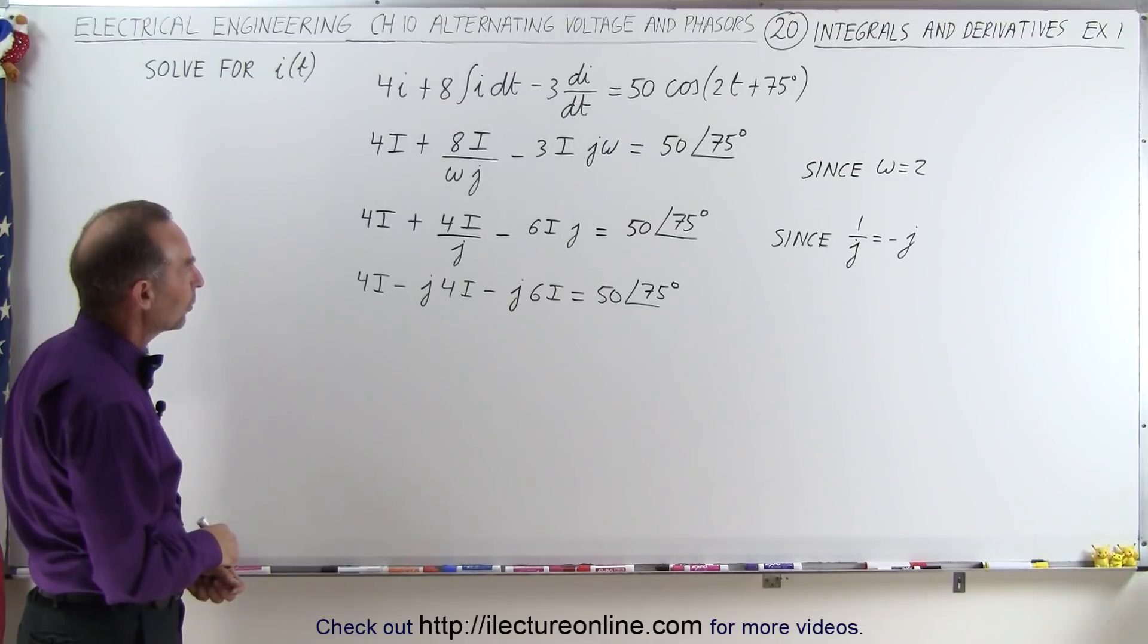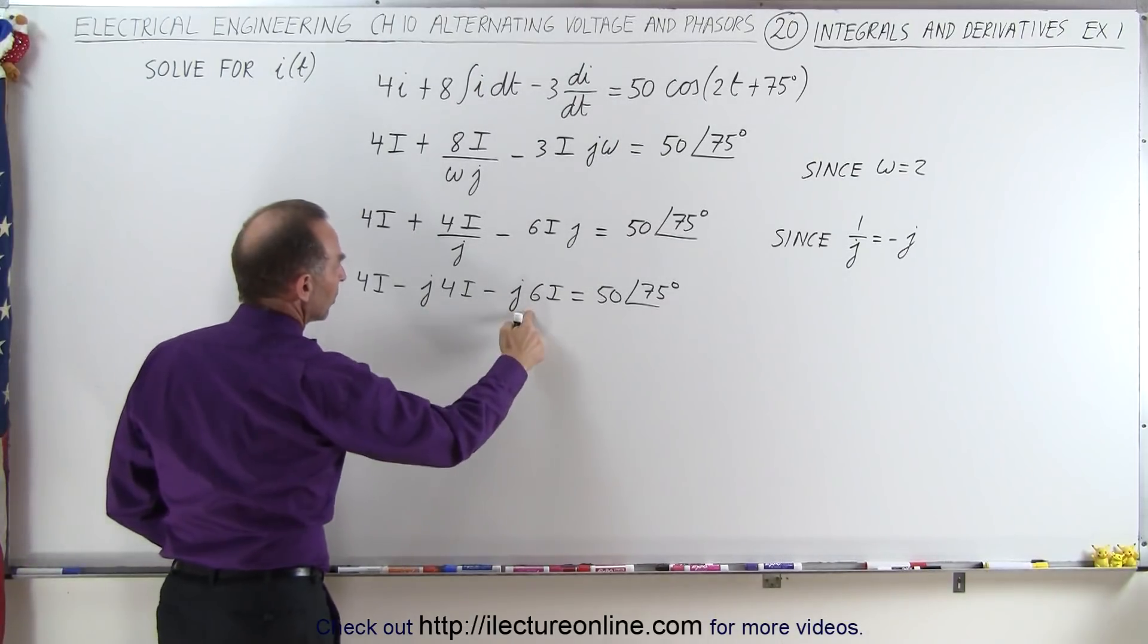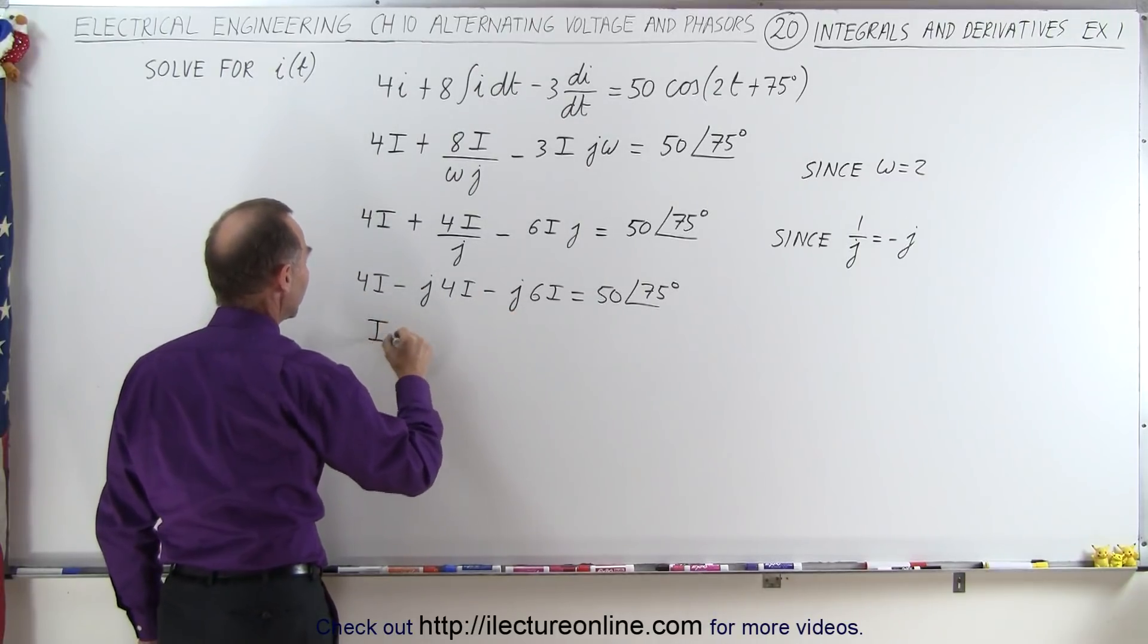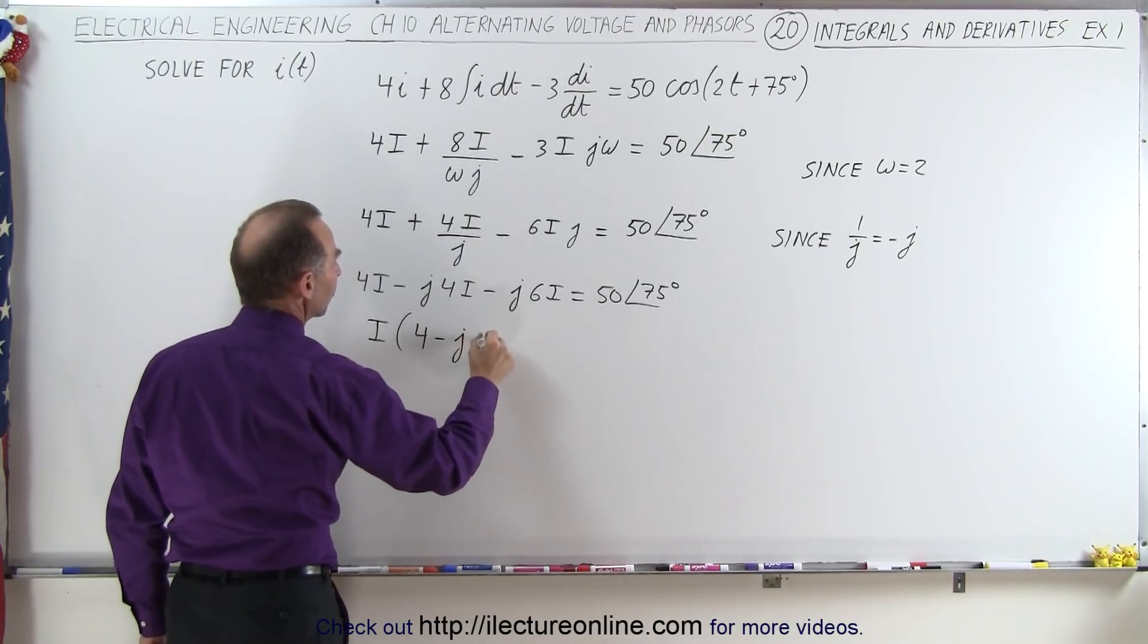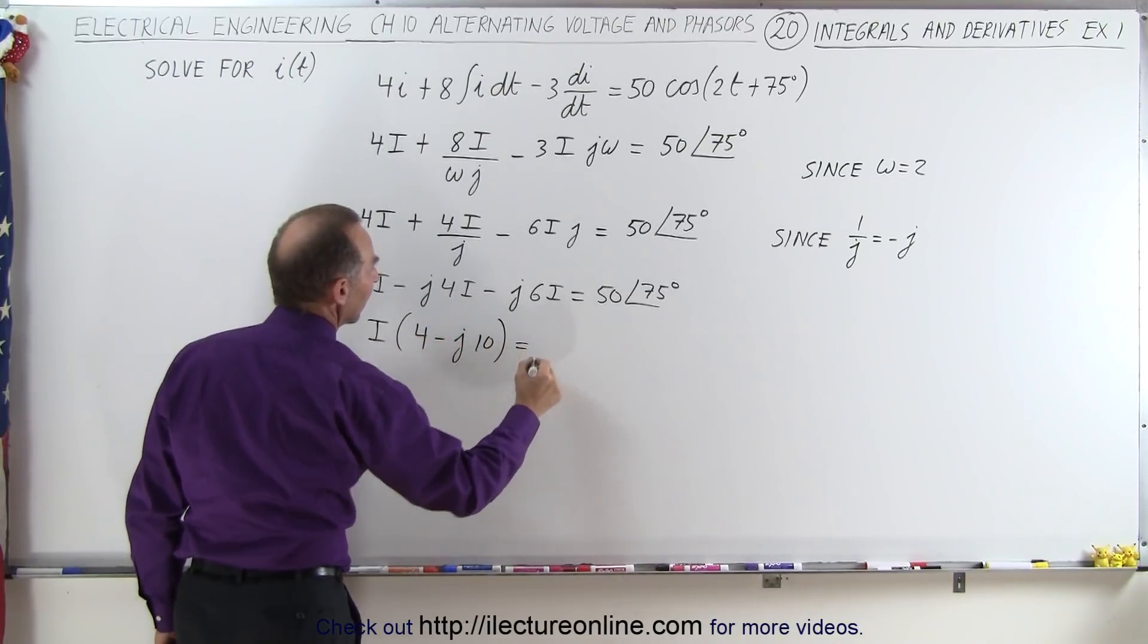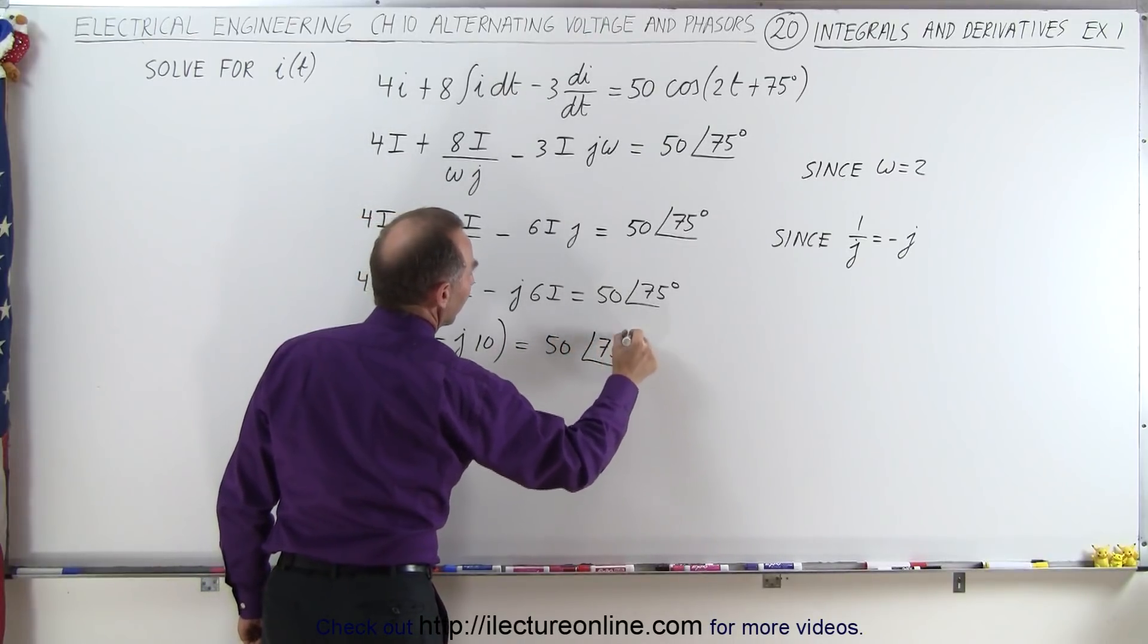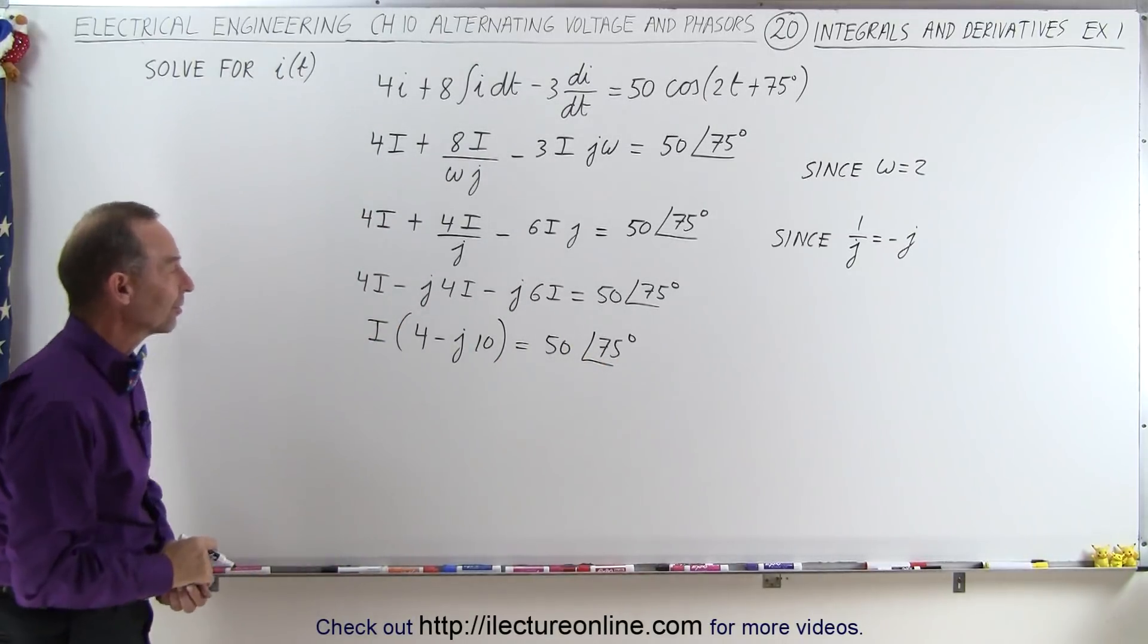All right, what do we do next? Well, it looks like we can combine these two. These are the two imaginary parts, that's the real part, and we can factor out an i. So i times the real part of 4 minus the imaginary part of j times 10, that's equal to magnitude of 50 and phase angle of 75 degrees.